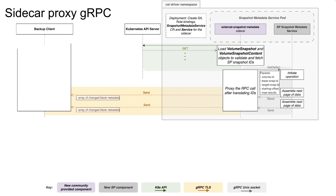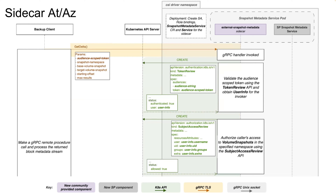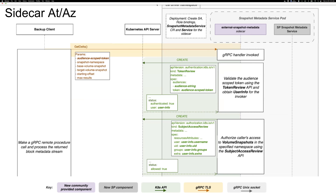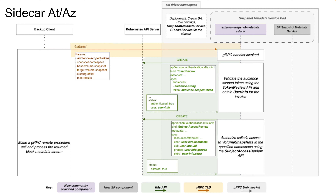Can you go back? I just want to understand that last part. What is the subject access review actually looking at to decide yes or no? The subject — there's a section called resource attributes where you specify the resource types involved. So with subject access review, we are checking if the client — whose identity we got by token review — has access to certain resources for certain verbs, like get, create, list. We will be checking if the client has access to volume snapshots and volume snapshot content.